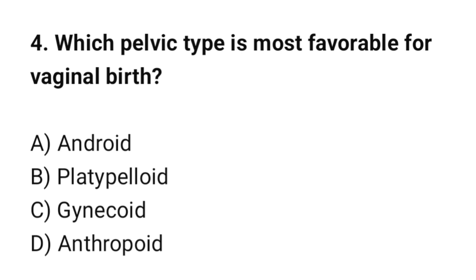Question No. 4: Which pelvic type is most favorable for vaginal birth? The correct option is C. Gynecoid.